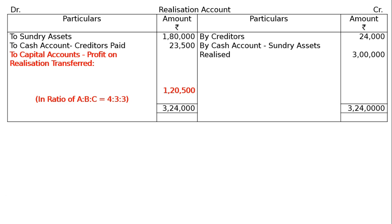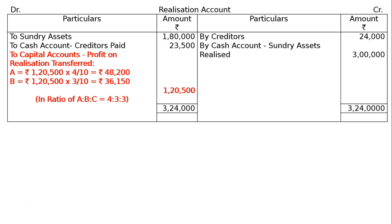To capital accounts: the profit on realization is transferred in the ratio of A:B:C = 4:3:3, totaling Rs. 1,20,500. For A: Rs. 1,20,500 × 4/10 = Rs. 48,200. For B: 3/10 = Rs. 36,150. For C: Rs. 36,150. The total is Rs. 1,20,500.